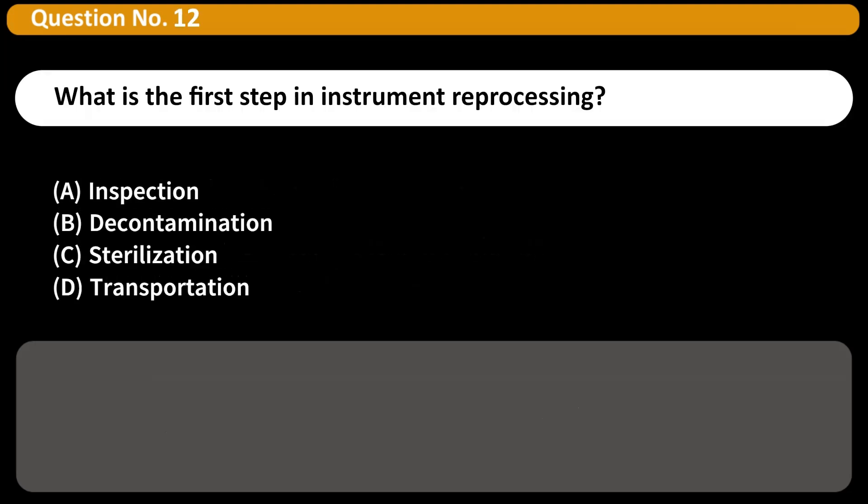What is the first step in instrument reprocessing? A. Inspection, B. Decontamination, C. Sterilization, D. Transportation. Answer D. Safe transport from the point of use to decontamination is the first step.